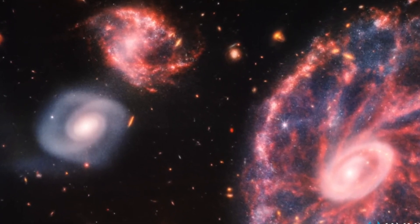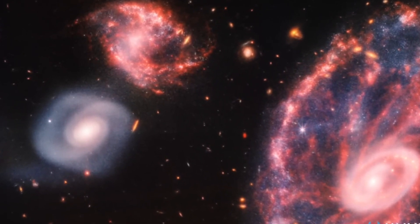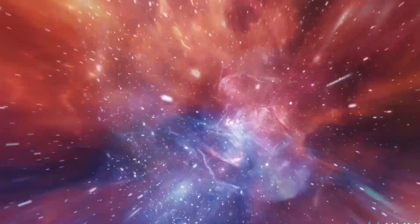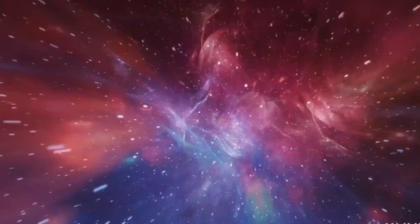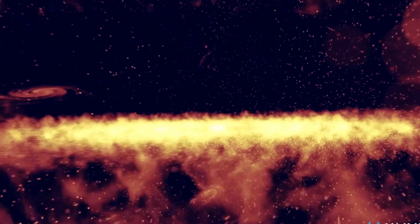New observations will shine light on the history and future development of the Cartwheel galaxy, which is still undergoing changes because of its collision. The collision reshaped the galaxy as astronomers perceive it today, creating a ring around the galaxy's core and another ring around the galaxy's periphery.